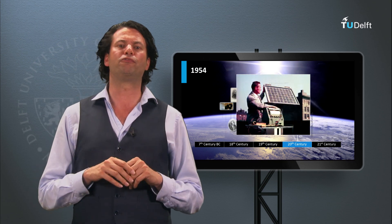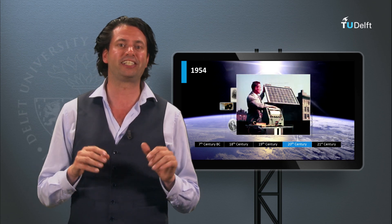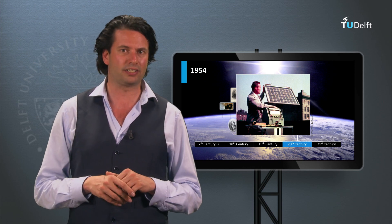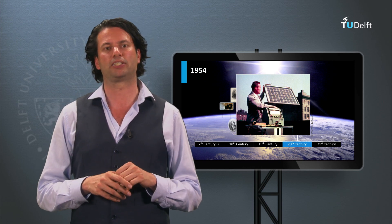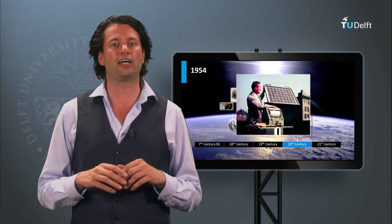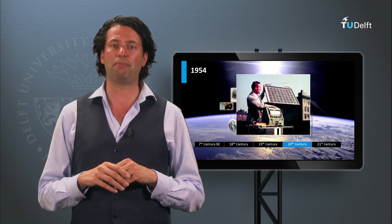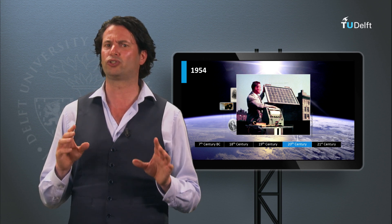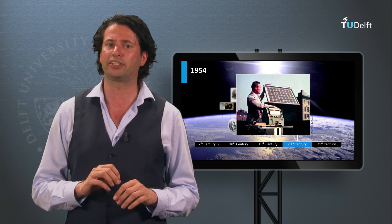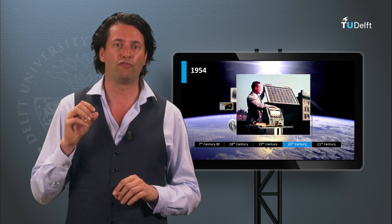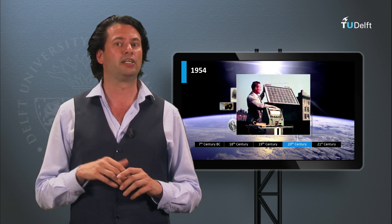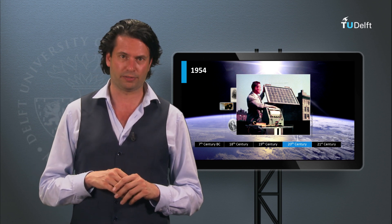The real development of modern photovoltaic devices as we know them today started at Bell Labs. In 1954, Bell Telephone Laboratories produced a silicon solar cell with a light-to-electricity conversion efficiency of 4%, and they later achieved 11%.